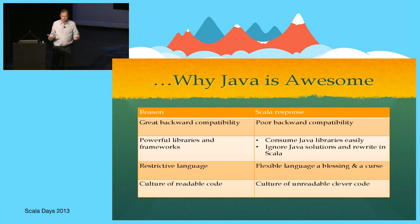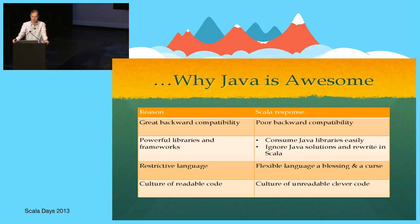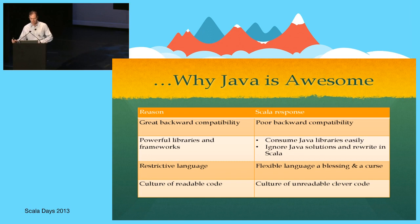Other reasons why Java is awesome: great backward compatibility — we have somewhat less than great backward compatibility. Java has some powerful libraries and frameworks. Here again we have a mixed story. It's actually very easy to consume those Java libraries, but there does seem to be a tendency towards real reinvention — ignoring things that may exist and be perfectly usable from Java land and rewriting them in Scala. Java is a very restrictive language; Scala is very flexible. This is mostly good but also somewhat dangerous because it means you need discipline in how you write Scala.